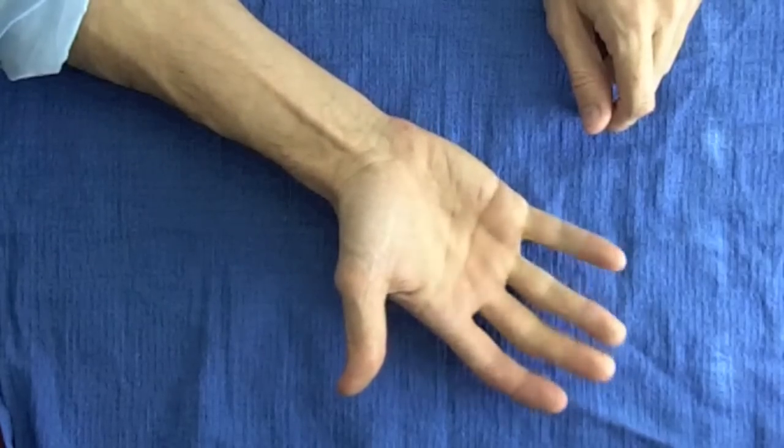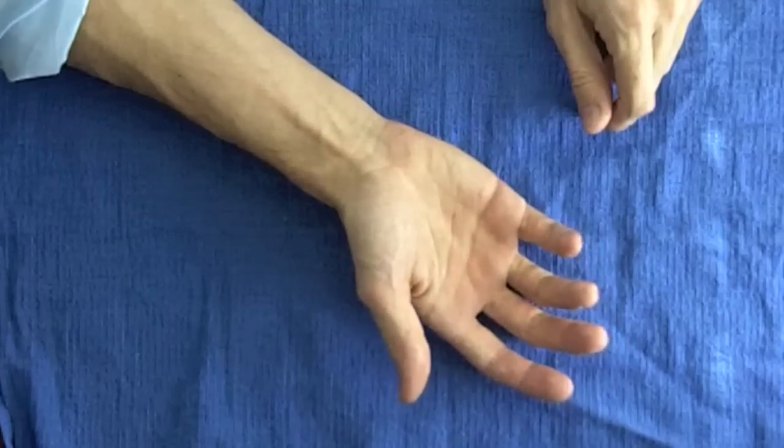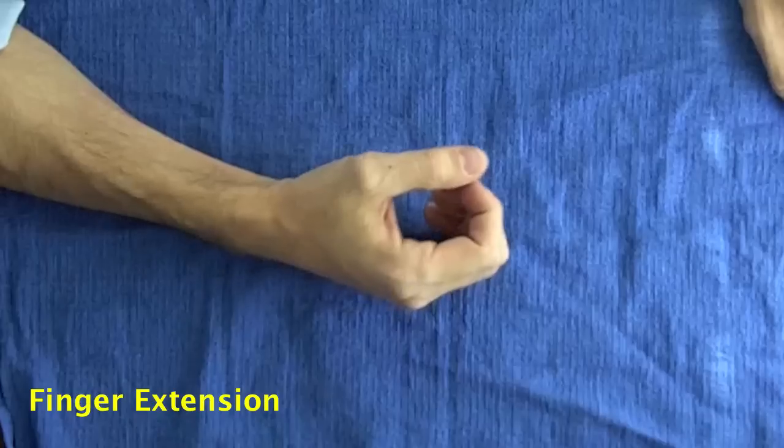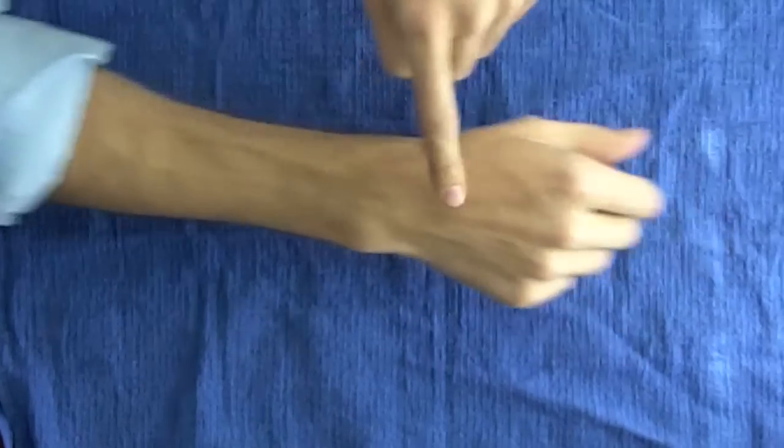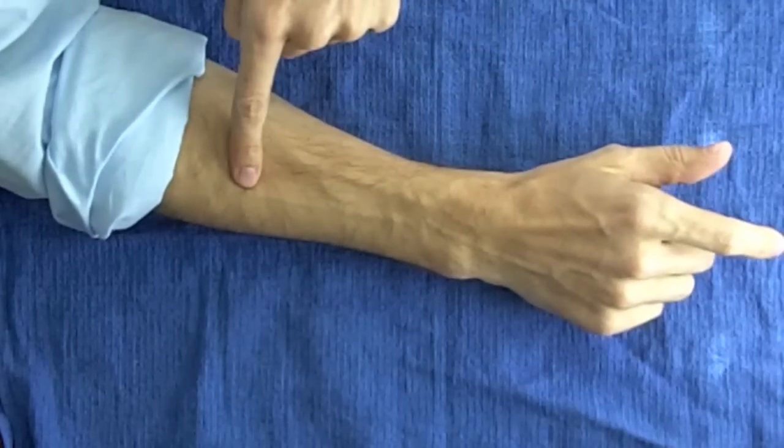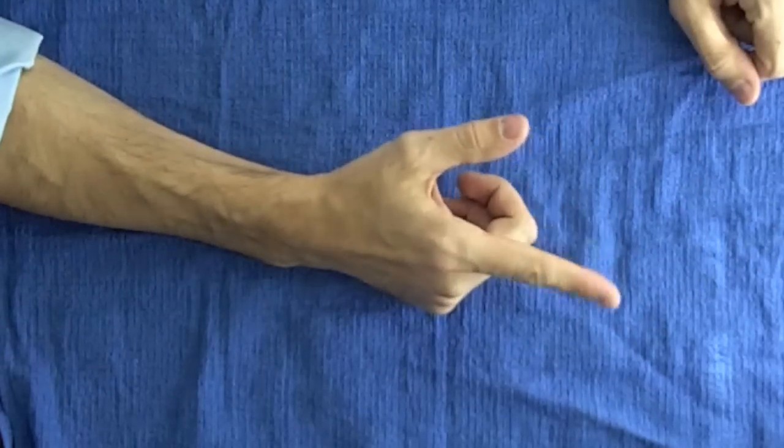Finger extension: extensor tendons attach on the top or backside of the fingers. As the extensor muscles fire, their tendons pull on the finger bones to straighten them out.